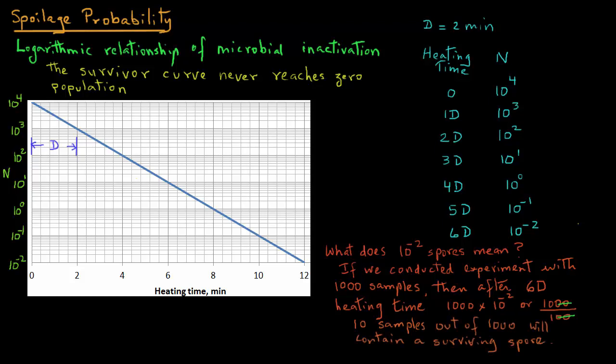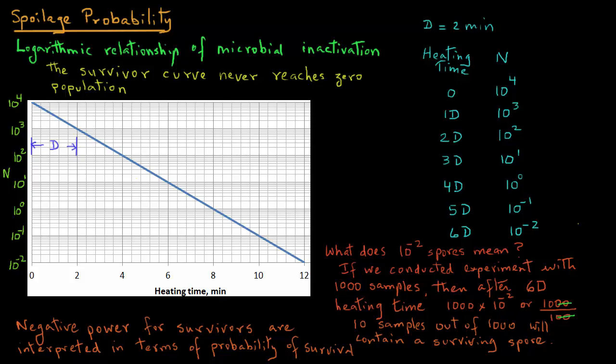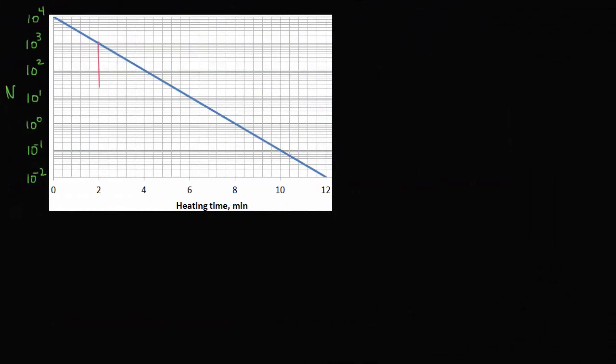So negative power, as we saw here, for survivors, is interpreted in terms of the probability of survival. So let's examine this a little further.